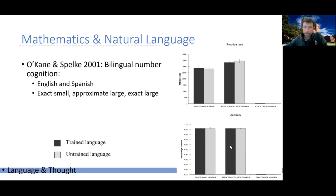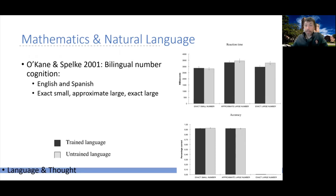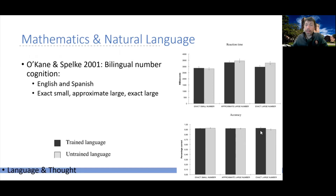Now the interesting one: exact large numbers. The theory says you only get exact large numbers thanks to language, which allows you to combine the representations from subitizing and the number sense modules. So we should expect language to play a role. Turns out, participants are indeed systematically and significantly faster when they respond in the same language in which they were trained, compared to responding in the other language. Similarly, they were more accurate when responding in the trained language.